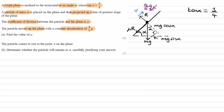The question is asking us to work out what mu is. The acceleration is down the slope, therefore the resultant force is in that direction too. Perpendicular to the slope, the normal reaction force and the component of weight mg cos alpha are equal and opposite, so there is no resultant force perpendicular to the slope. Therefore r equals mg cos alpha.